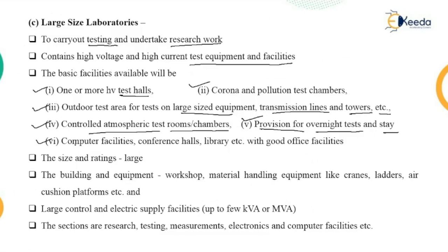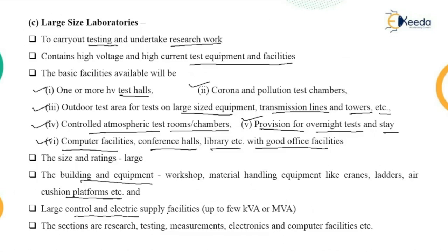Large labs should also have computer facilities, conference halls, a library, and good office facilities. The building and equipment include workshops and material handling equipment like cranes, ladders, and air cushion platforms. Personnel include a director or manager, group leaders, and section heads for research, testing, measurement, electronics, and computer facilities, supported by test engineers, technicians, library and office staff, and skilled and semi-skilled workers.